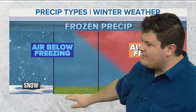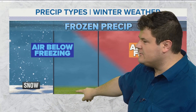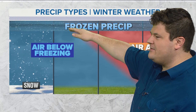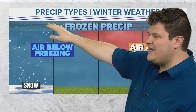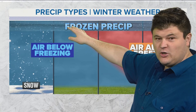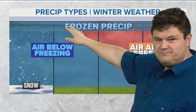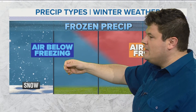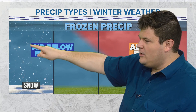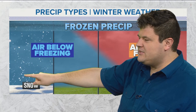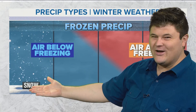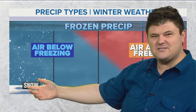This is the ground, here's our surface. This is the atmosphere as we go up, and this is where the base of a cloud would be, where the precipitation would start frozen — let's say snow. So we have frozen precipitation falling through all air below freezing, it reaches the surface as snow.